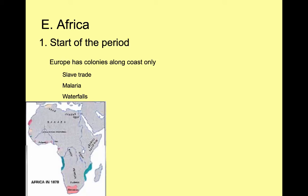This is the third part of our imperialism lecture. Today we're going to talk mostly about Africa and imperialism, and then we're going to end with a slide on immigration worldwide. So let's start with Africa.